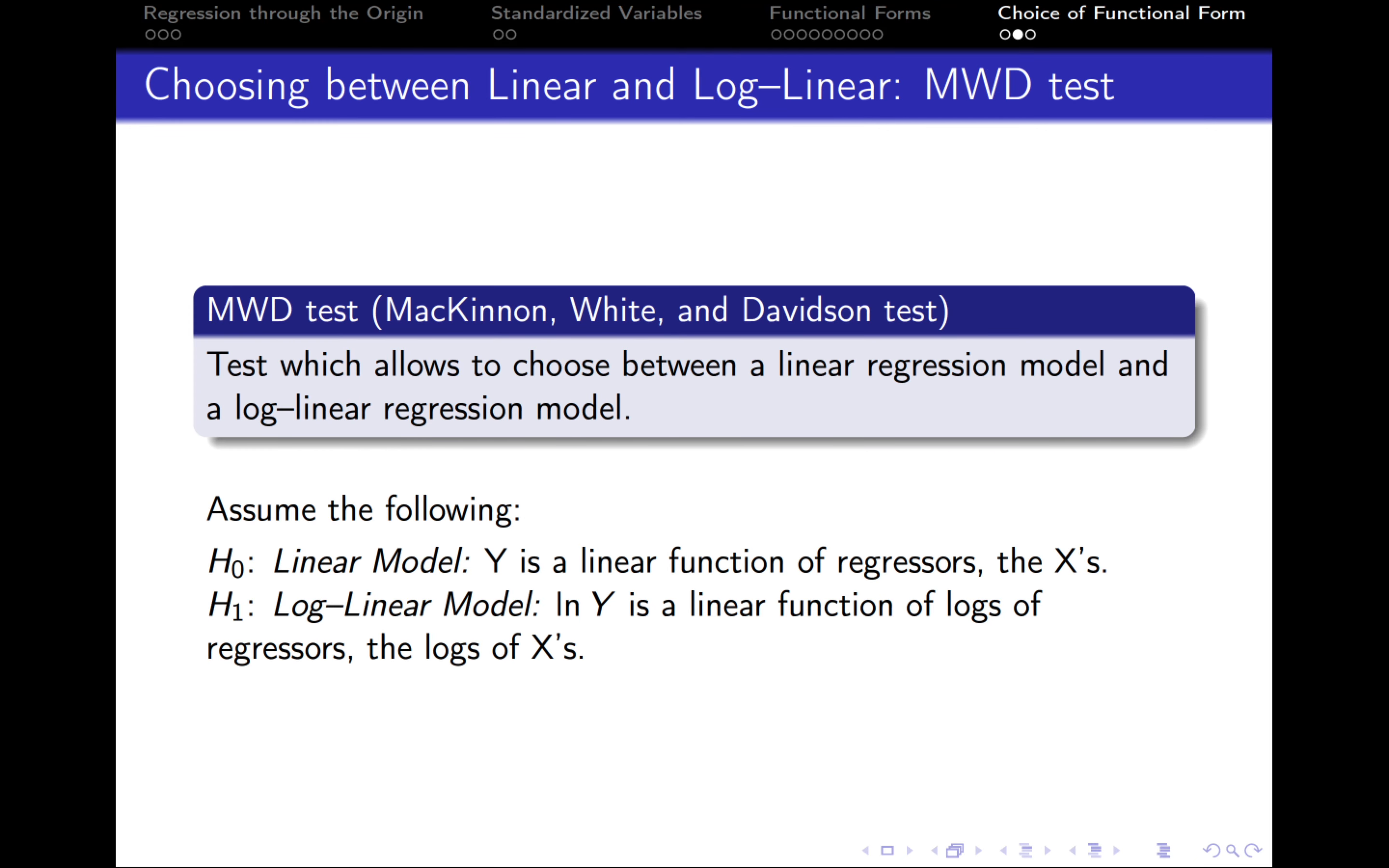There is also a formal way of choosing between linear and log-linear model and this test has been developed by McKinnon, White and Davidson. This test makes the following assumptions. The null hypothesis is that the linear model is the correct one, so y is the linear function of regressors of X's. The alternative hypothesis is that the true model is the log-linear model, which means that the natural logarithm of y is the linear function of logs of the regressors or the logs of X's.